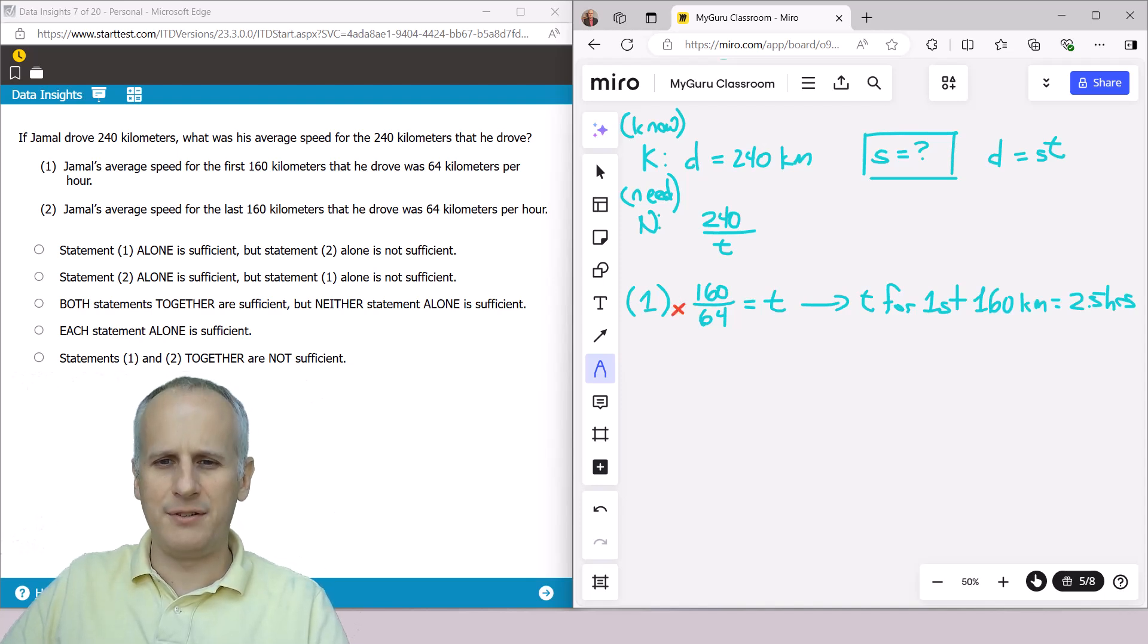And we know that our options after condition one is not sufficient are going to be B, C, or E. Meaning statement two alone is sufficient, meaning that together they're sufficient but neither alone is sufficient, or they together are still not sufficient. So then we move on and evaluate condition two alone, which reads: Jamal's average speed for the last 160 kilometers that he drove was 64 kilometers per hour. Well, we've already done the math, so we know that 160 divided by 64 is going to be equal to 2.5 hours for the last 160 kilometers.